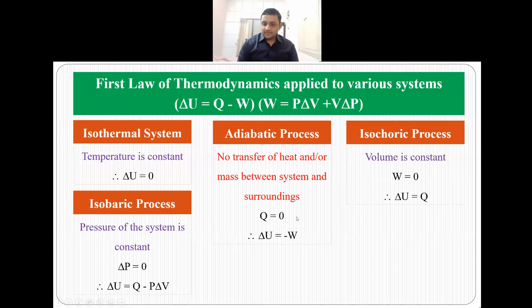In adiabatic process what happens is there is no transfer of heat or mass between the system and surrounding and that is why Q is zero and since Q is zero delta U is equal to minus W.